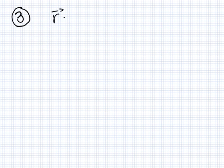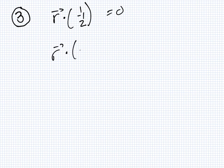I minus J plus 2K. I minus J plus 2K? Yeah. I minus J plus 2K. And minus I plus 2J. Minus I plus 3 — no K. No K. Yeah. And also, that is the unit vector.